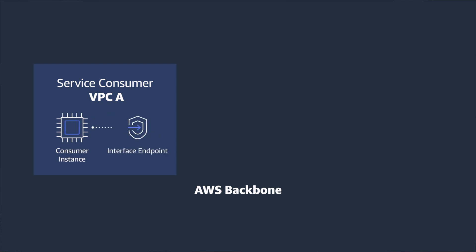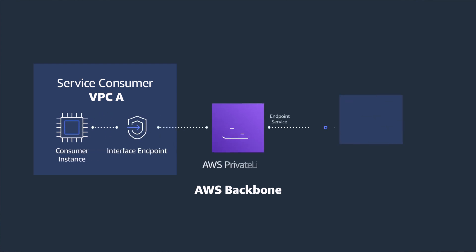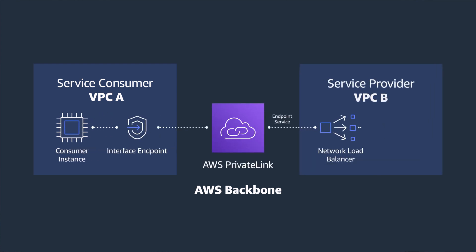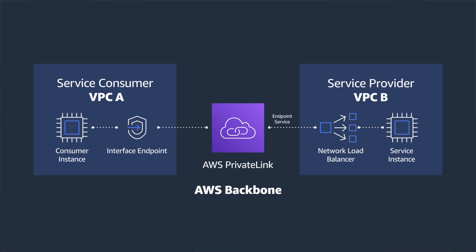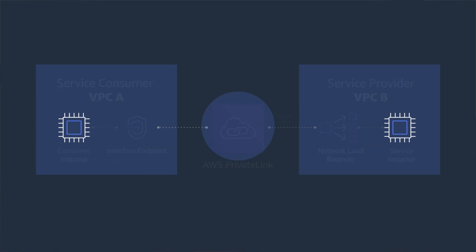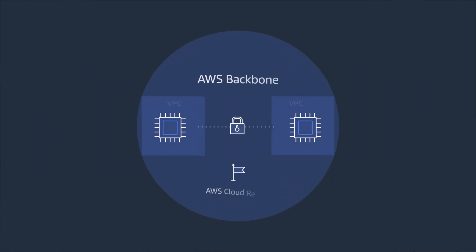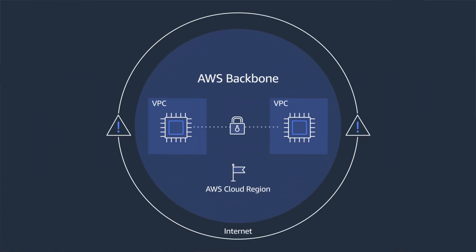PrivateLink allows you to connect an application running in separate Amazon VPCs, AWS accounts, and on-premise networks through a simple private and secure service endpoint. Network traffic that uses AWS PrivateLink doesn't traverse the public internet, reducing exposure to brute force and distributed denial of service attacks, along with other threats.